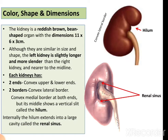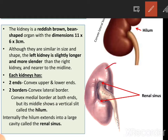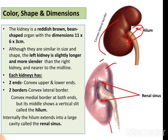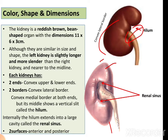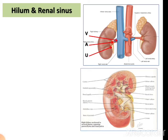Each kidney has two ends: the upper and the lower. There are also two borders — the convex outer border and the inner border. The convex border is on the medial side at both ends, but in the middle there is a vertical slit on the medial side. This slit is known as the hilum, where we can see the emergence of the pelvis of the ureter. Internally, the hilum extends into a large cavity known as the renal sinus. The two surfaces are the anterior and the posterior surface.